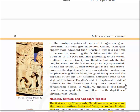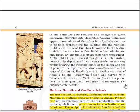Narration gets elaborated and the carving techniques appear more advanced than at Bharud. The symbol continues to be used representing the Buddha and the Manushi Buddha or past Buddhas. According to the textual tradition, there are 24 Buddhas, but only the first — Pankara — and the last 6 are pictorially represented.